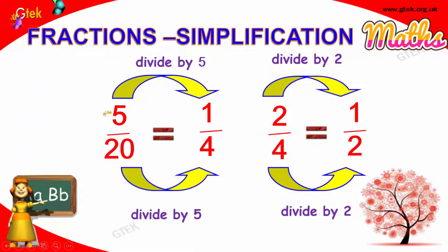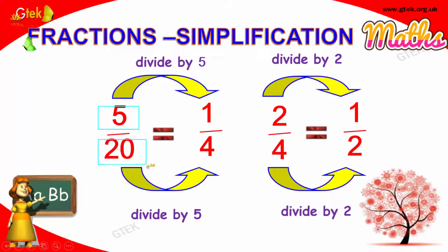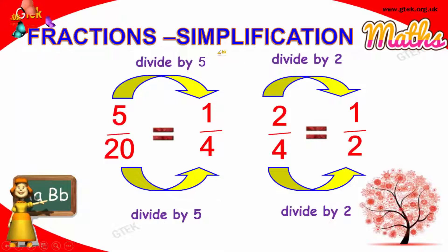The top number is called the numerator and the bottom number is called the denominator. We divide both by a common number that can divide both the numerator and denominator. That's called simplification.